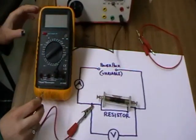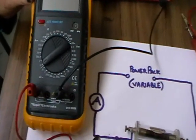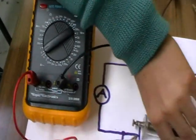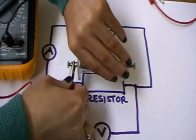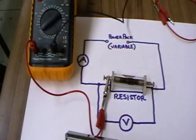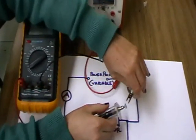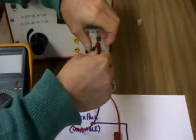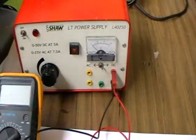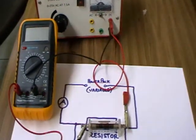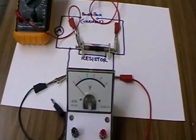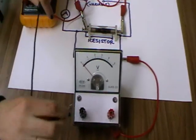Connect the red lead to the 10 amp terminal of the ammeter and to the resistor. Connect the other side of the resistor to the red terminal of the power pack. Connect the voltmeter in parallel with the resistor.